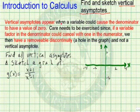Vertical asymptotes will appear when we have a variable in the denominator and it causes the denominator to have a value of 0. Care needs to be taken because if a variable factor in the denominator cancels with one in the numerator, we don't have a vertical asymptote. Instead, we have a removable discontinuity, like a hole in the graph.